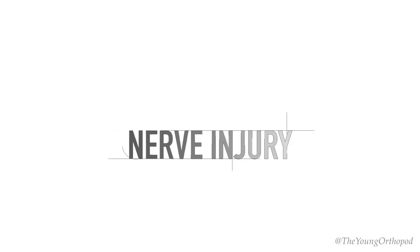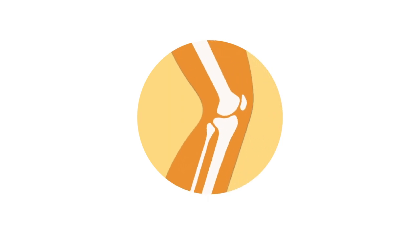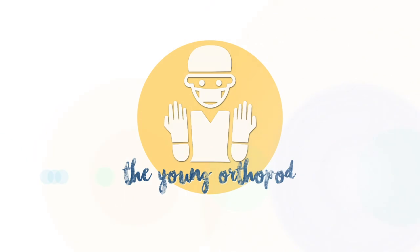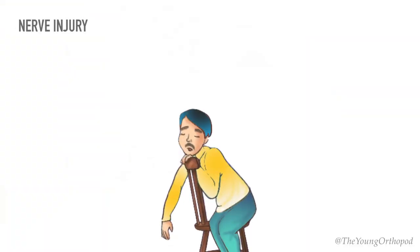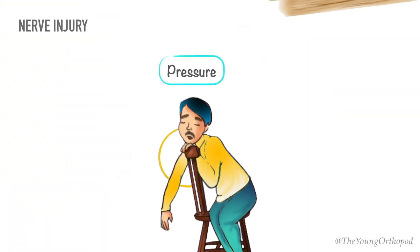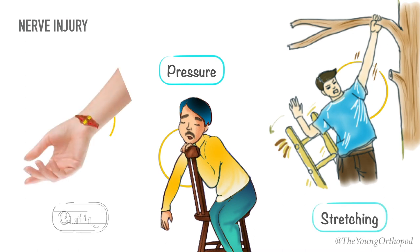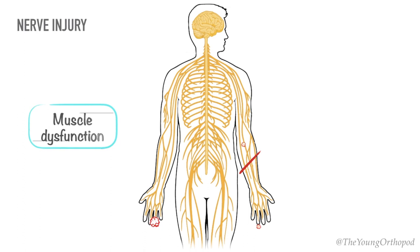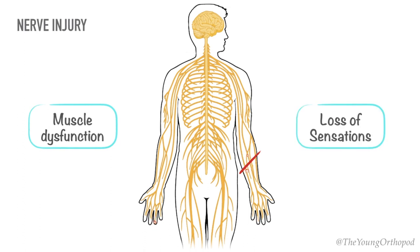Hello and welcome to the Young Orthopod podcast. Today we will discuss nerve injuries. Nerves can be damaged by pressure, stretching, or cutting injuries. Nerve injury can interrupt signal transmission to and from the brain, leading to muscle dysfunction and a loss of sensation in the injured area.